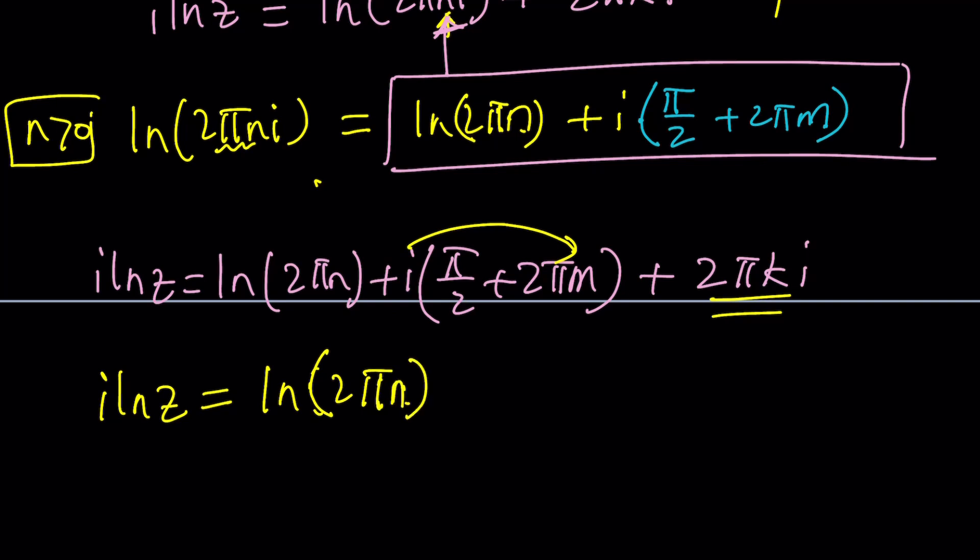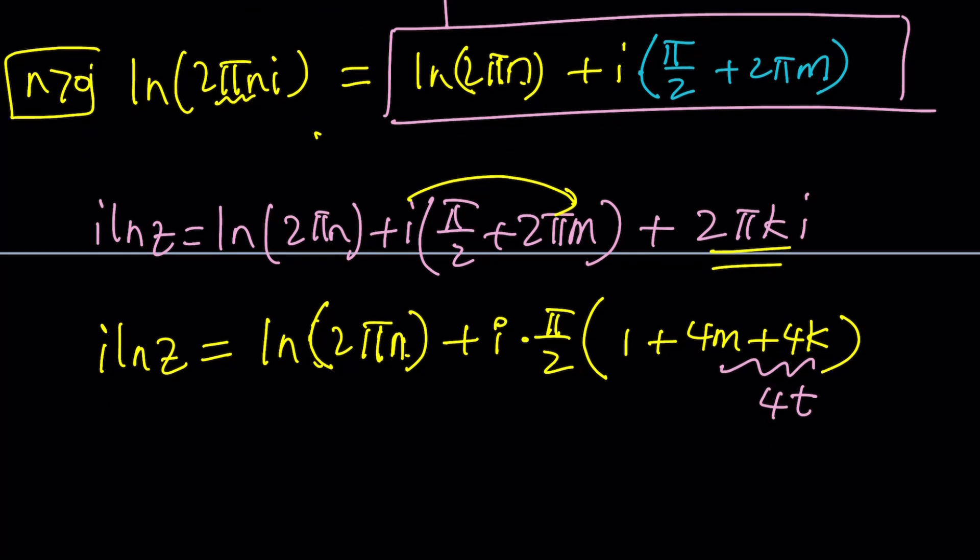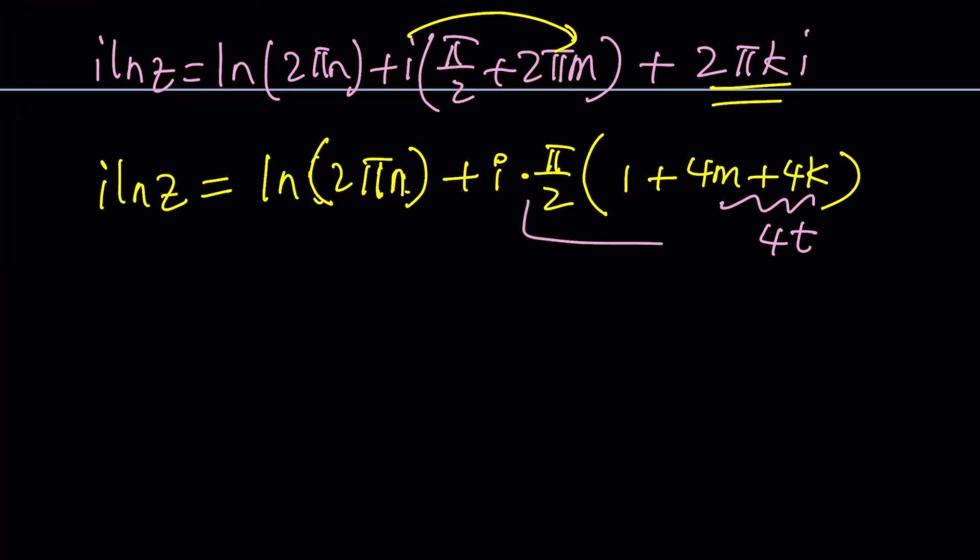And then we're going to write this as i times pi over 2, then we're going to get 1 plus 4m plus 4k. Because pi over 2 cancel out with 4. But this is just 4 times the number. So we could easily drop one of these. You can use a different constant like t. When you multiply these, you're going to get 2 pi i t. So i ln z becomes ln 2 pi n plus 2 pi i t.